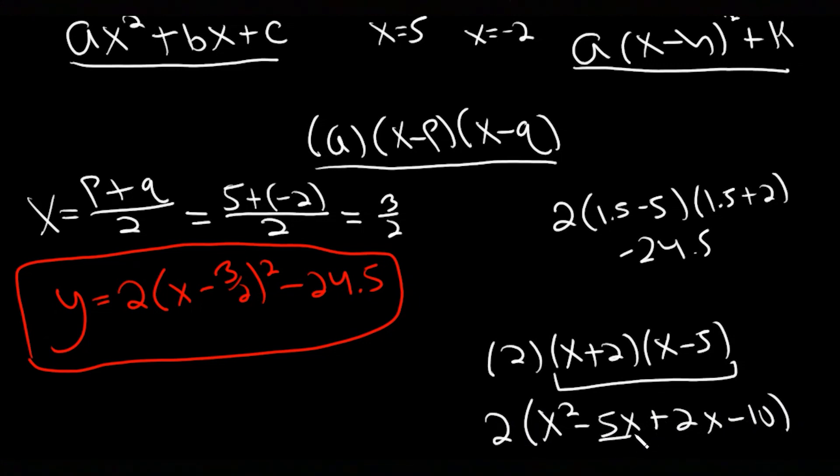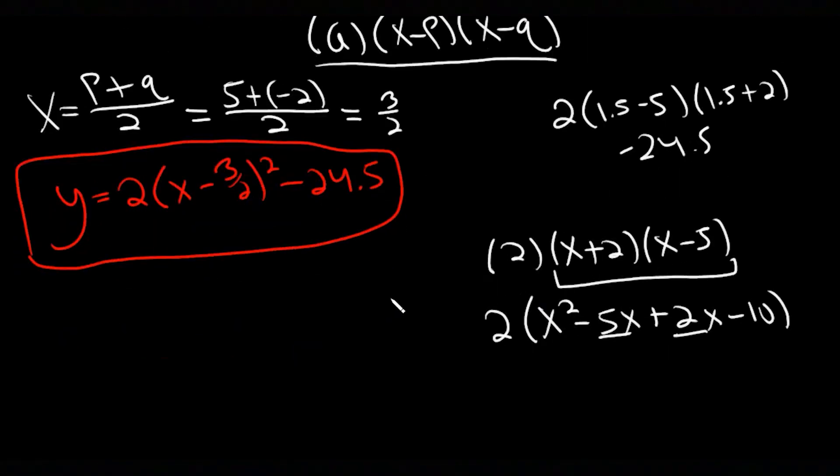I can combine like terms. We get 2(x² - 3x - 10), combining those like terms. Then finally distributing the 2, we get y = 2x² - 6x - 20. You can see that my a value is consistent across all three forms. Here it is in standard form.